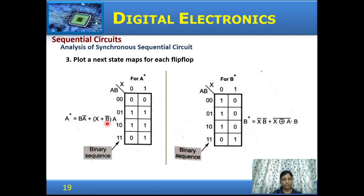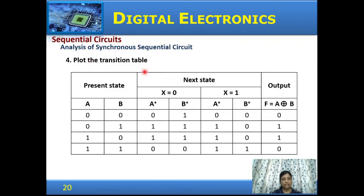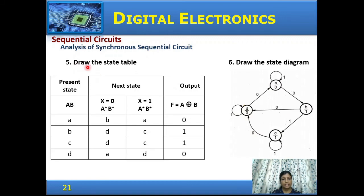With the state equations for QA_next and QB_next, substitute all combinations of variables A, B, and X to fill the state table. From the transition table, represent the present state and next state for X=0 and X=1 along with the output. Then replace binary state values with state variable labels to produce the state table, and finally draw the state diagram.